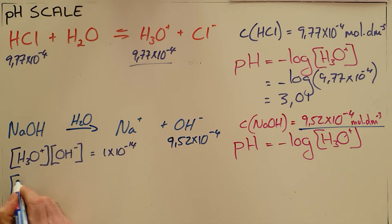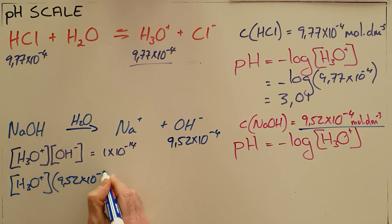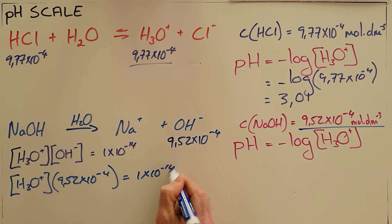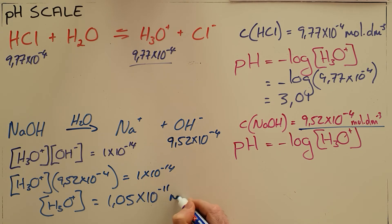So we can then substitute our hydroxide ion concentration in here and solve to find the hydronium ion concentration in the solution, which we find to be 1.05 times 10 to the minus 11 moles per cubic decimeter.